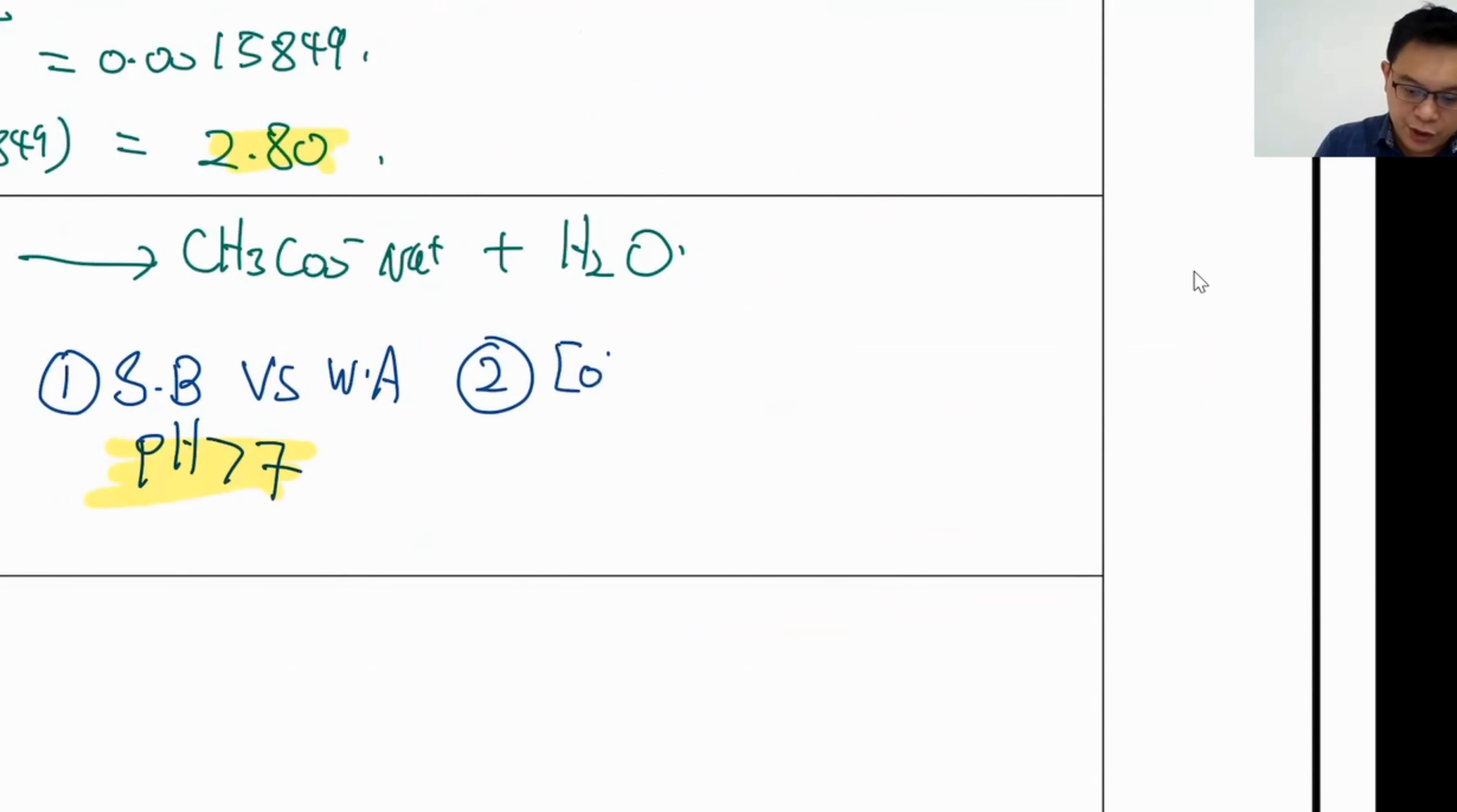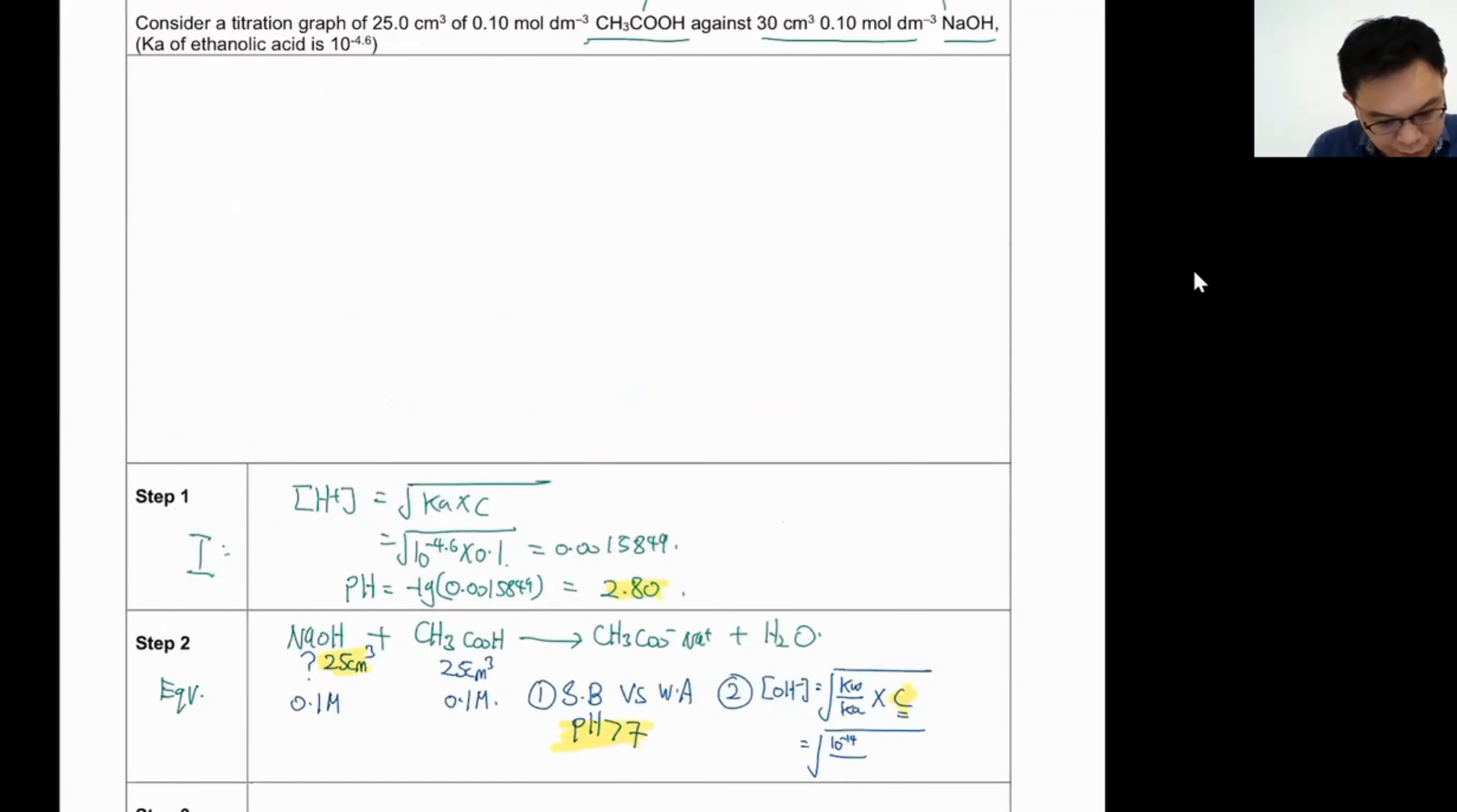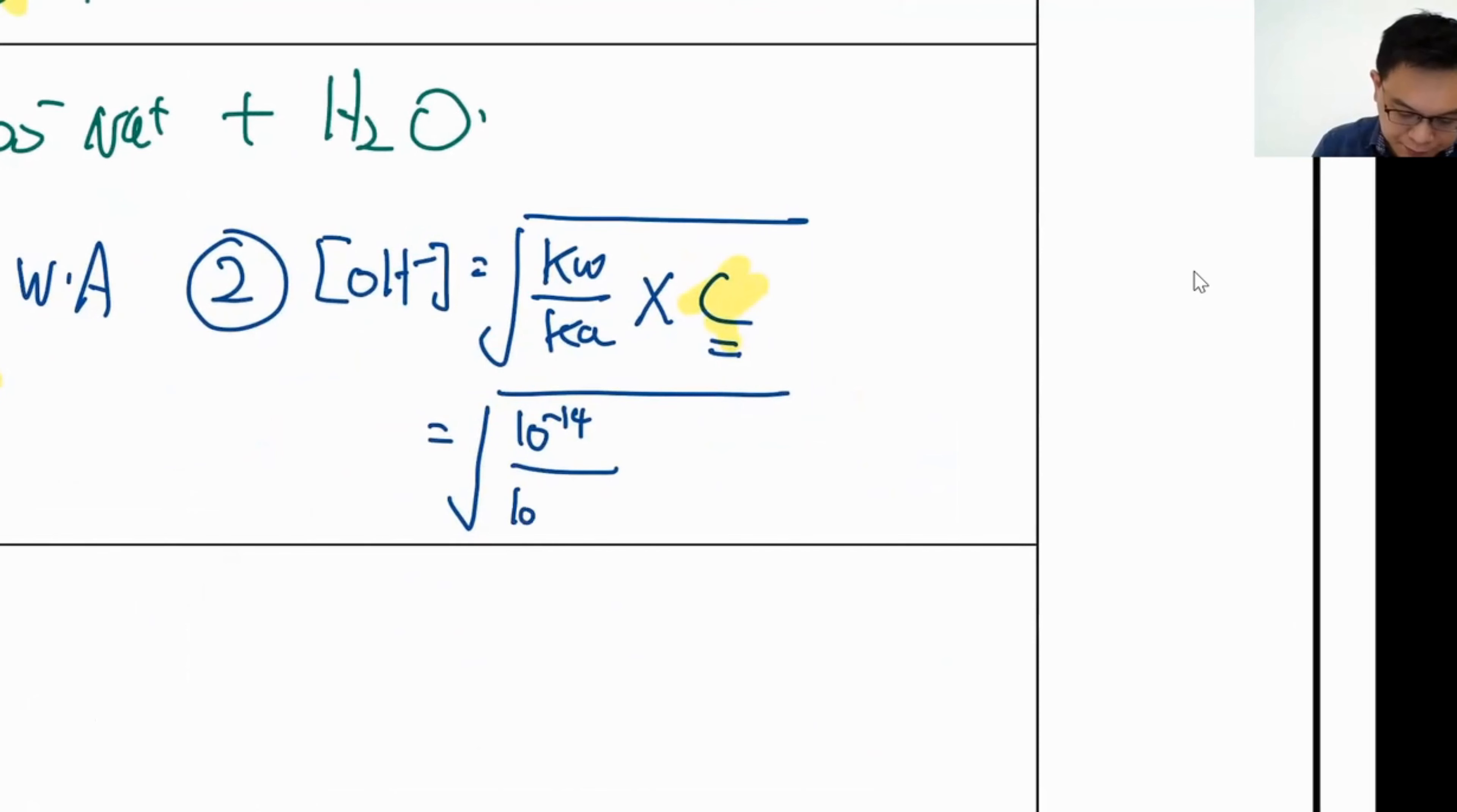So that means OH minus equals square root of Kw over Ka times C. Now, the C is the concentration of salt. Ka, of course, given. I am going to sub in the values. So pay close attention, especially to the C. C is a very, very tricky part. Kw is 10 to the power of minus 14. This one we definitely know. Ka value, sorry I forgot, Ka value is 10 to the power of minus 4.6.